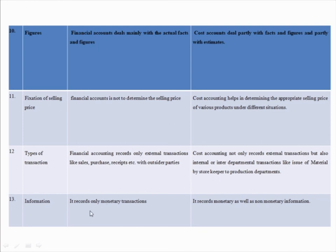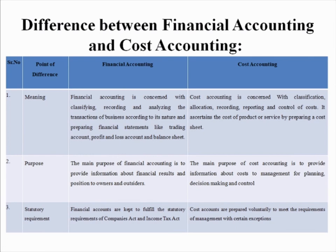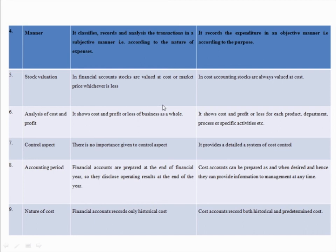In financial accounts, it records only monetary transactions. Cost accounting records monetary as well as non-monetary transactions. These are the differences between financial accounting and cost accounting, showing how financial accounting is different from cost accounting. Thank you.